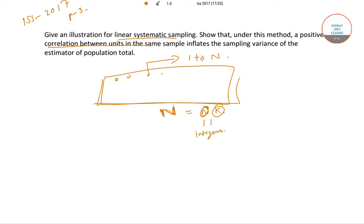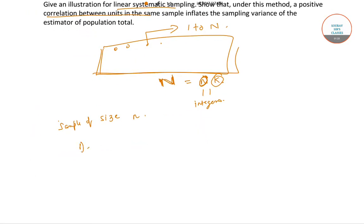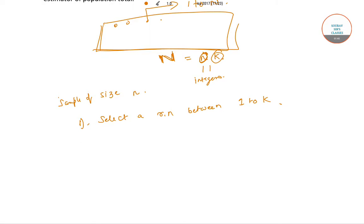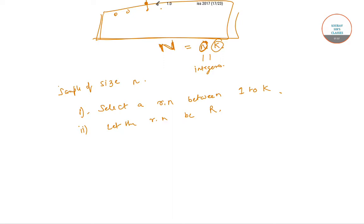To draw a sample of size small n, what we have to do is first select a random number between 1 to k. Now suppose the random number is R. So R is the random number which is selected between 1 to k.